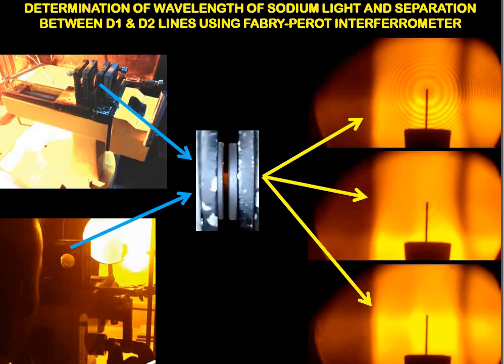This is our practical that we do in our optics lab. Basically, what we do is we try to determine the wavelength of sodium light — number one — and number two, the separation between the two doublet lines: 5890 Angstrom and 5896 Angstrom.